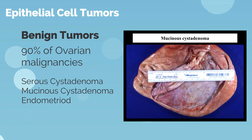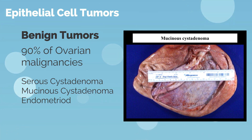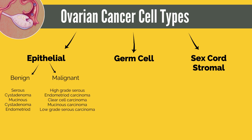Epithelial carcinoma is the most frequent type of ovarian cancer and accounts for almost 90% of ovarian malignancies. Benign epithelial tumors include serous cystadenoma, mucinous cystadenoma, or endometrioid. There are also several malignant epithelial tumors. These include high-grade serous, endometrioid carcinoma, clear cell carcinoma, mucinous carcinoma, and low-grade serous carcinoma.